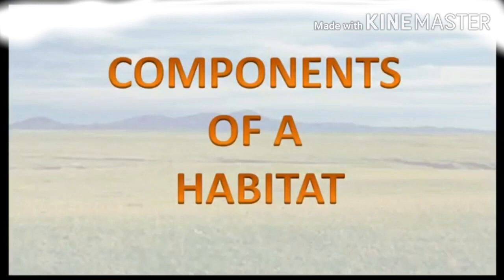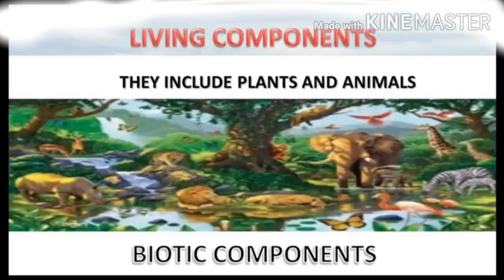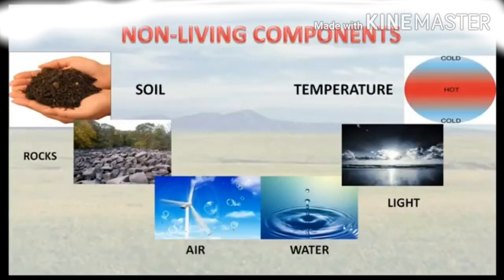Components of a habitat include living components as well as non-living components. Living components include plants and animals and are also known as biotic components. Non-living components are soil, rocks, temperature, light, etc., and are known as abiotic components.